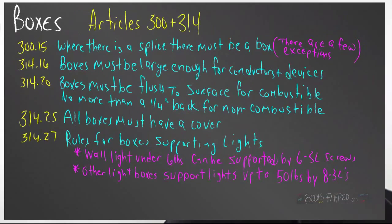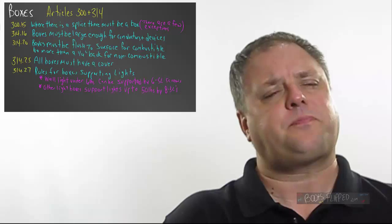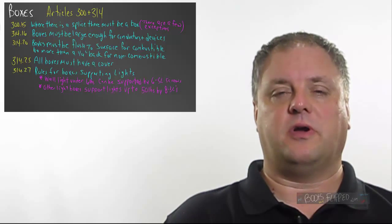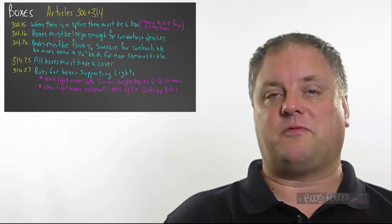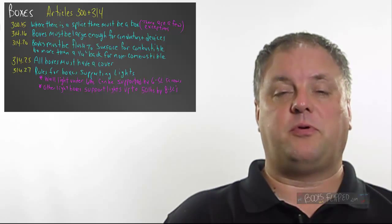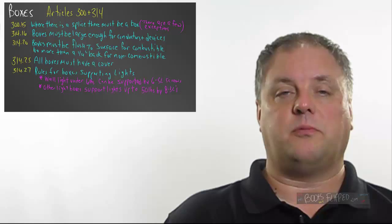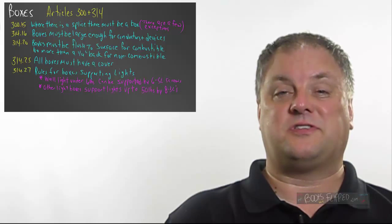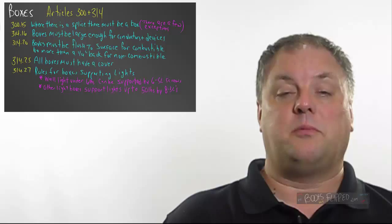314.20, you will run into this a lot. Inspectors love this code. Your boxes in combustible material must be flush with the face of the material. So, if you put a box above a stove that goes in the cabinet for the microwave, guess what the cabinet for the microwave is made out of? Wood. Wood is combustible. If they put that right against your receptacle, and they don't make the opening large enough for you to put the plate onto the wall, you're going to have to use some sort of extending device because now you have a combustible material behind your plate.